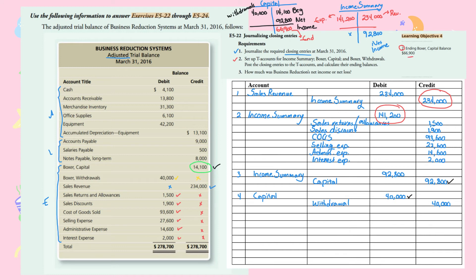Requirement three: how much was Business Reduction Systems' net income or net loss? From the Income Summary T-account, since revenues exceeded expenses, we have net income of $92,800.